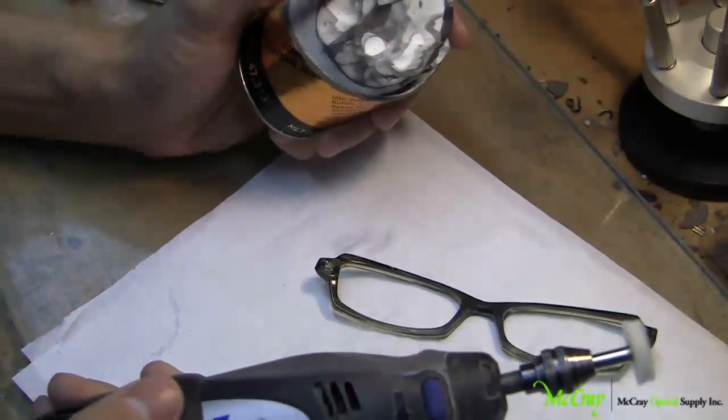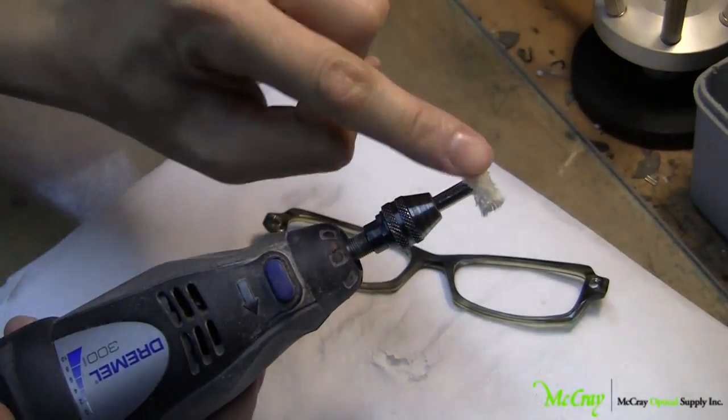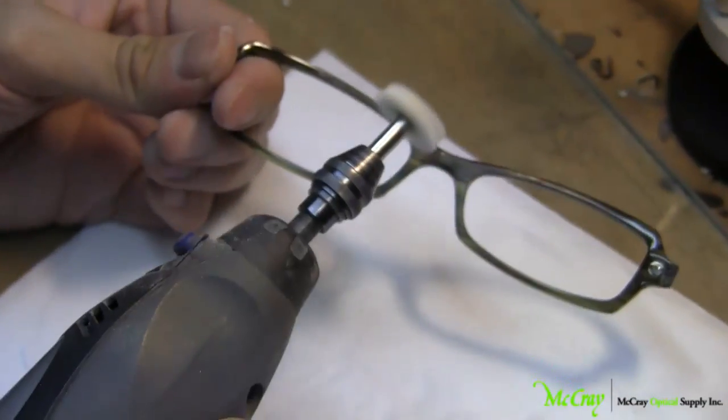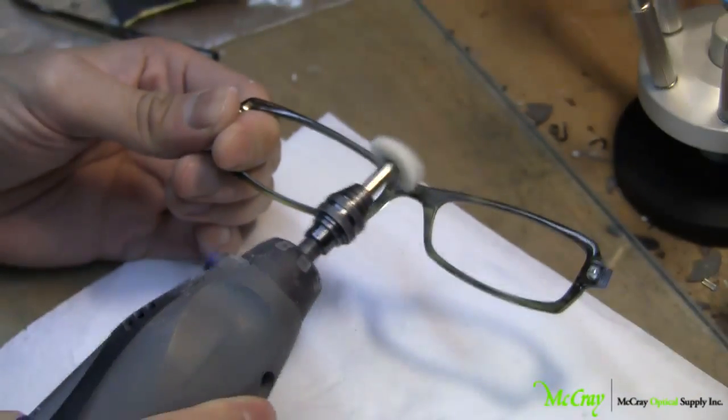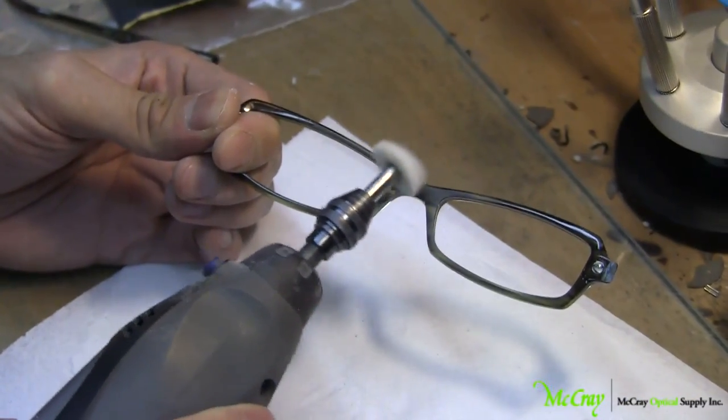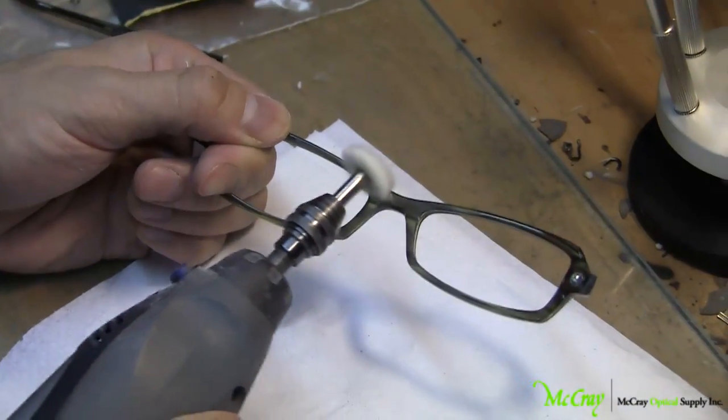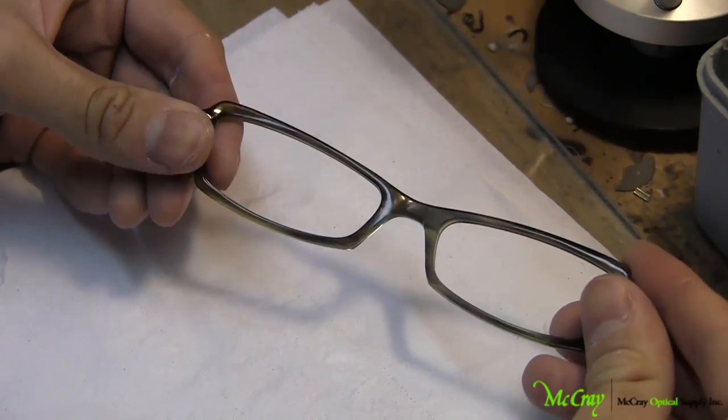Once that's done, then you're ready to work on the actual frame. And just lightly kind of polish over, and right away you can start seeing that there is going to be a small difference. Now this is the result of the actual Dremel tool buffing wheel.